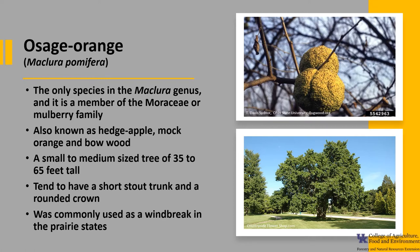The Osage Orange was commonly used as a windbreak in the prairie states, and its large unusual-looking fruit resembles a large bumpy apple, thus its name hedge apple.